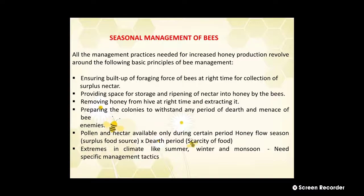Then preparing the colonies to withstand any period of dearth. The dearth period means there is a shortage of nectar and pollen. Pollen and nectar are available only during certain periods — the honey flow season, which is a surplus food source, and the dearth period, which is a scarcity of food. Extremes in climate like summer, winter, and monsoon need specific management tactics.